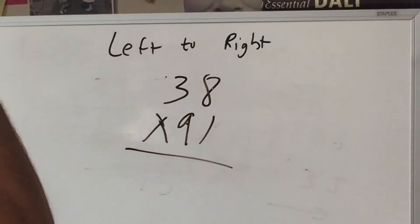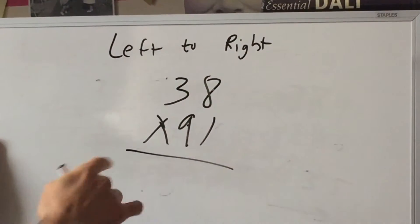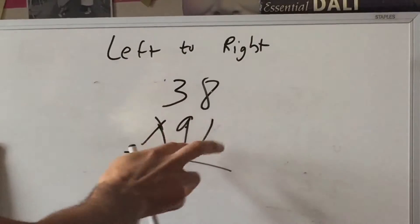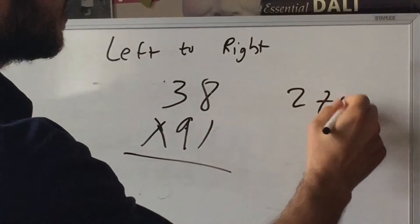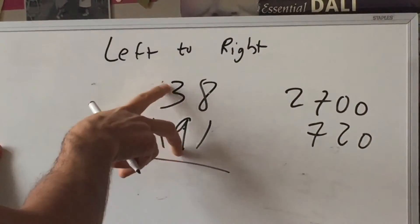Which we're keeping in our heads, hence the addition problems that we did before came first. Twenty seven hundred and seven twenty. So to write some of that out, we're keeping this in our heads, so that's twenty seven hundred and seven twenty and that's your thirty eight.